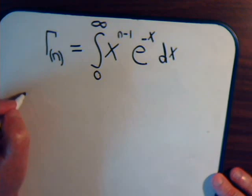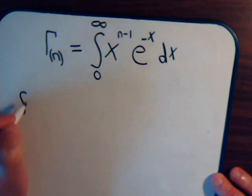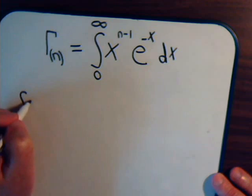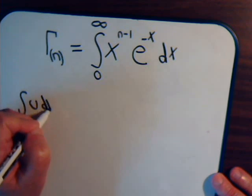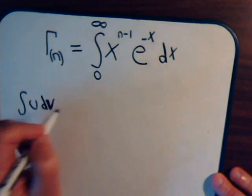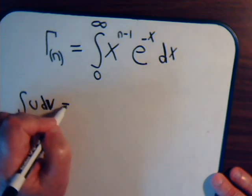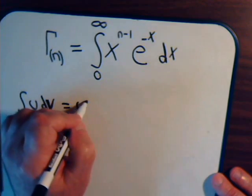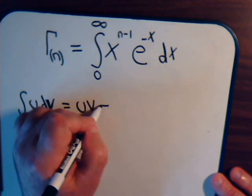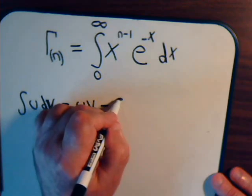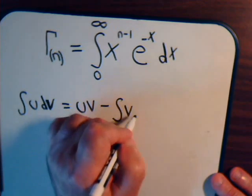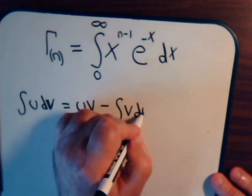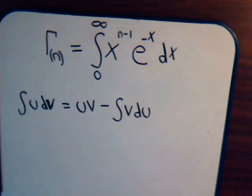Remember how integration by parts is set up: the integral of u dv equals u times v minus the integral of v du.